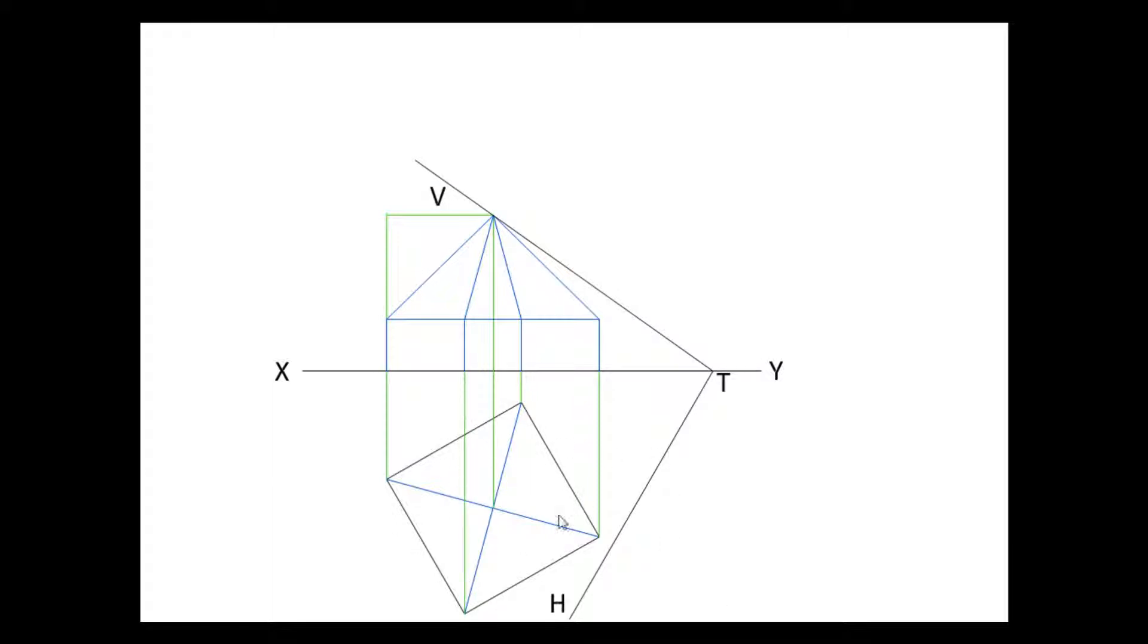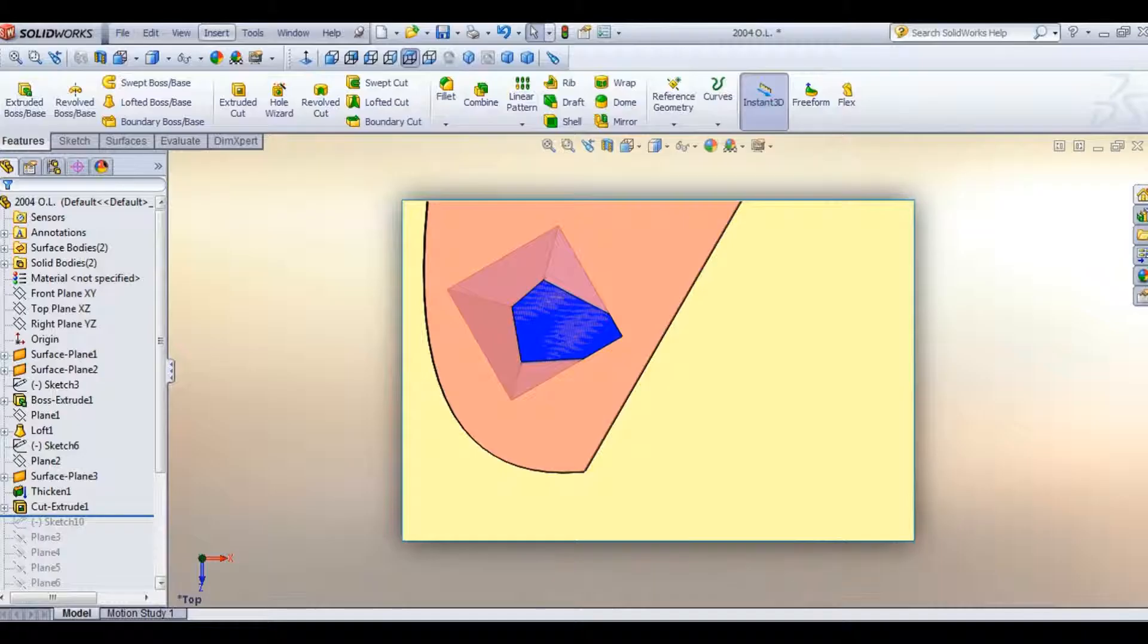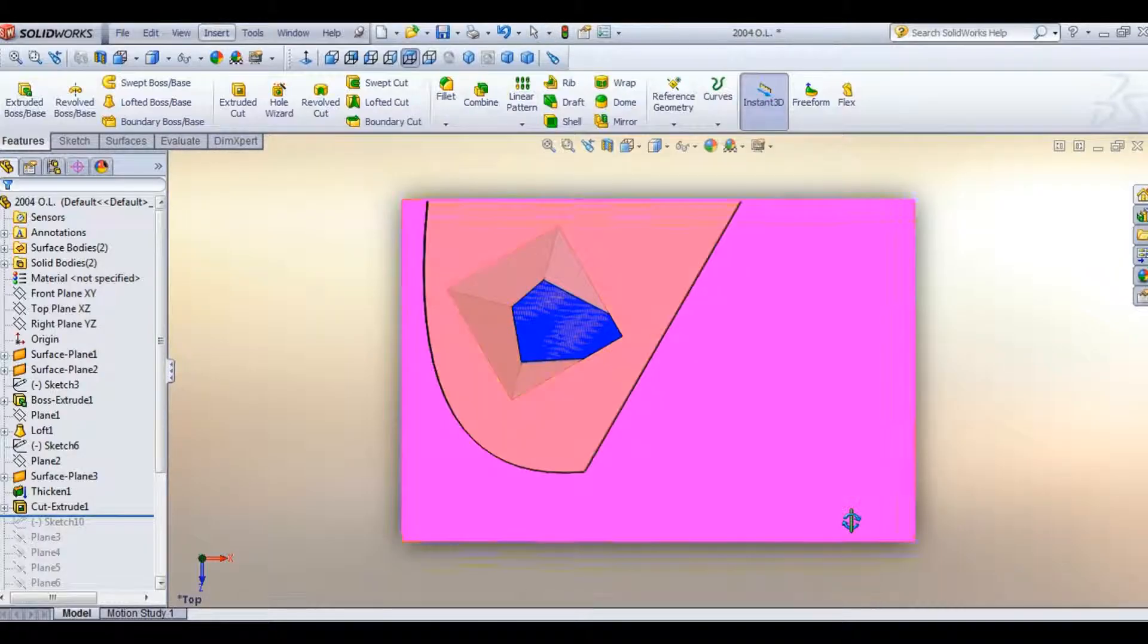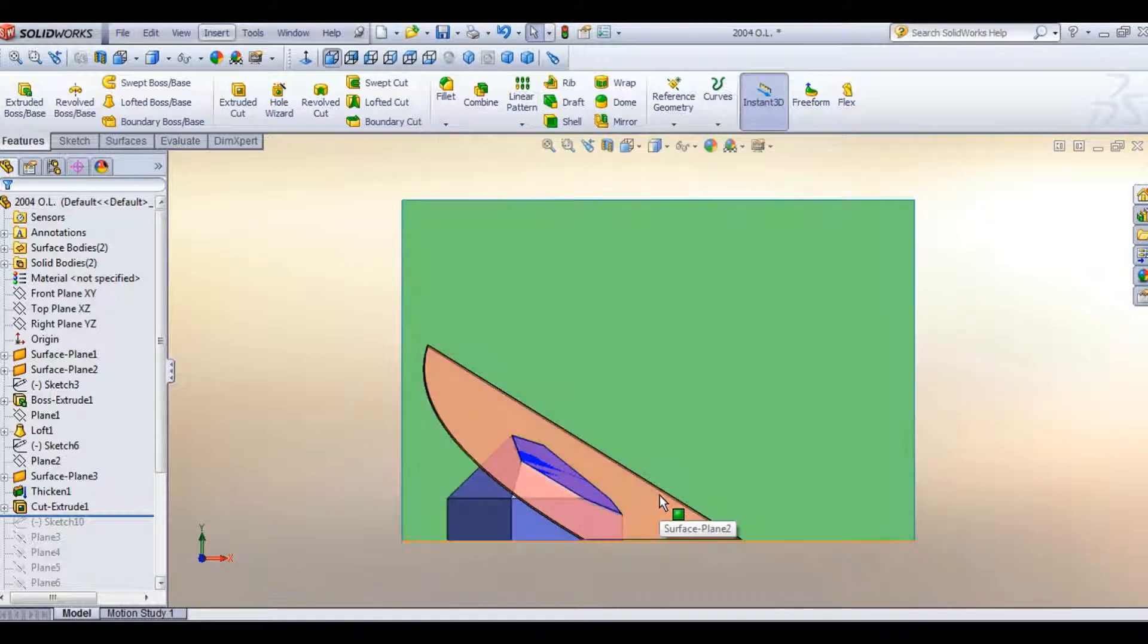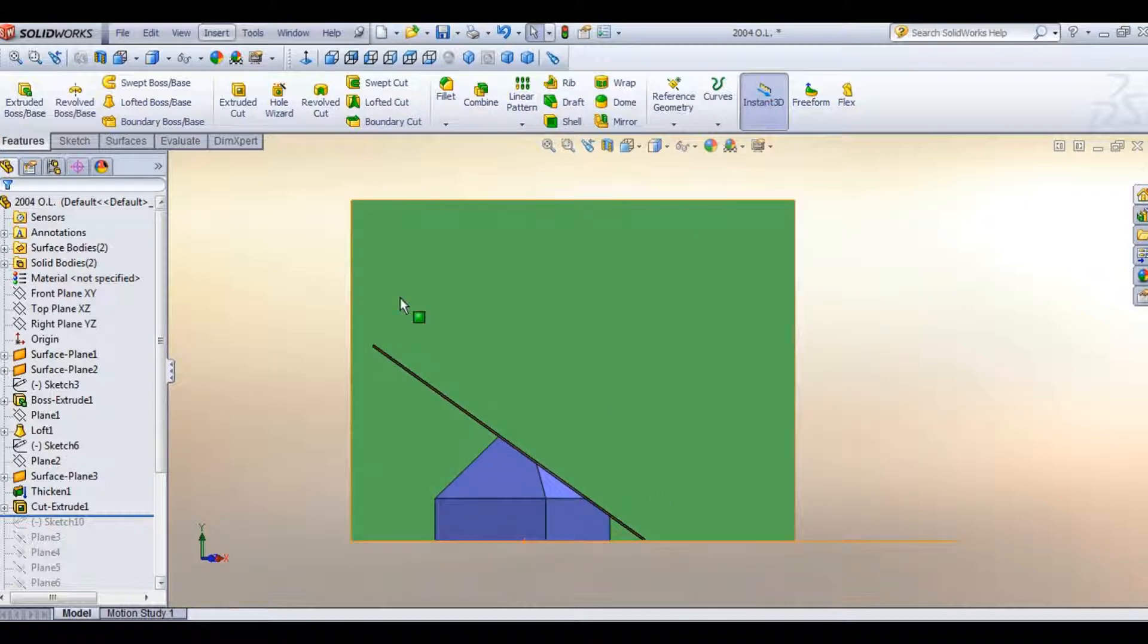Now, to find where this plane cuts the object, what we're going to do is we're going to take an auxiliary elevation, looking up the direction that my mouse is pointing here. The auxiliary elevation is just an elevation taken at a different angle. The one that we're going to look at is the one where we can see this plane as an edge view.